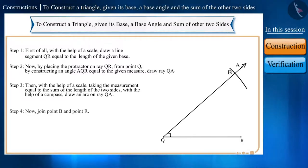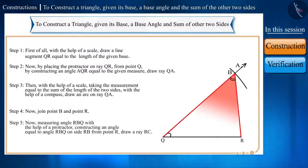Step 4. Now, let's join point B and point R. Step 5. Now, measuring angle RBQ with the help of a protractor, constructing an angle equal to angle RBQ on side RB from point R, draw a ray RC. Then, name the point of intersection of side QA and side RC as point P.